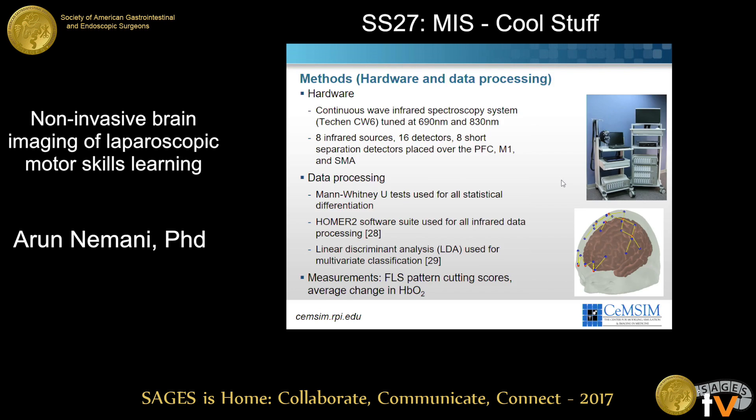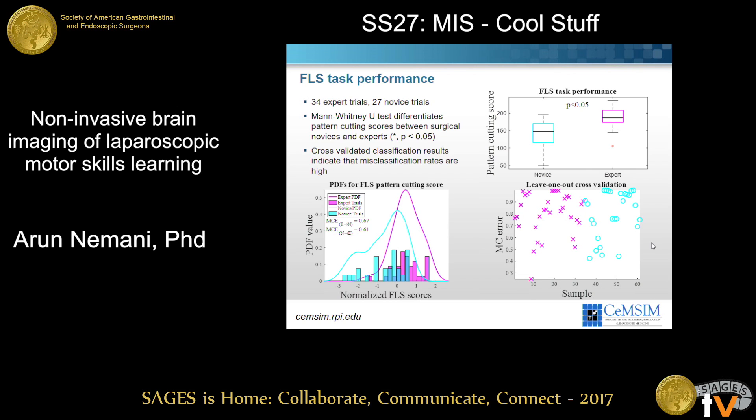First we start with our baseline: the FLS task performance scores. As expected, there's a clear differentiation in task performance scores. But when we go to the classification model, that's when it starts to have fairly poor results — up to almost 67% misclassification error for any new user claiming a particular score. And when we try to validate this model, we see the same issue with fairly high misclassification errors, even though it passed a statistical test.